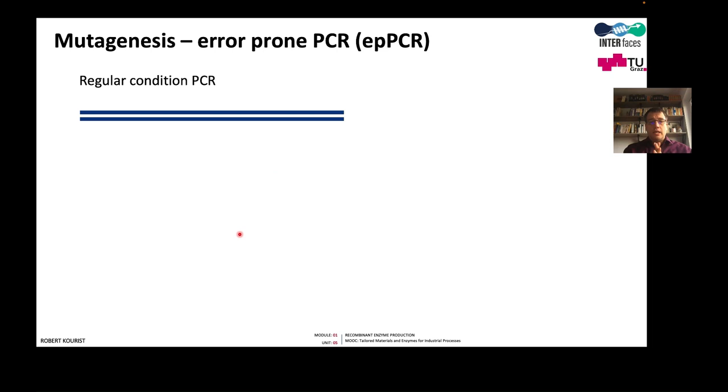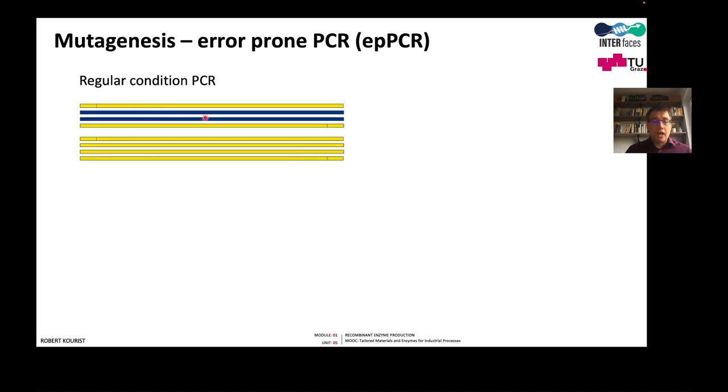Error-prone PCR was one of the very first methods used for mutagenesis for directed evolution. It is quite a simple method and can be done in every lab that has the ingredients and machines for regular PCR. In regular PCR, a double-stranded DNA is our template. Specific primers bind, and the polymerase amplifies the two strands. The product of the PCR serves as template for the next cycle, so in every step the concentration of the DNA doubles. Because of this, it is called a chain reaction.